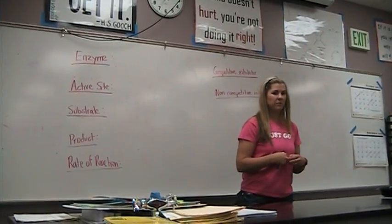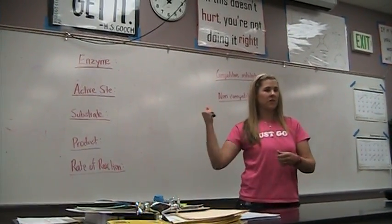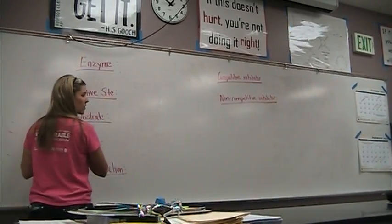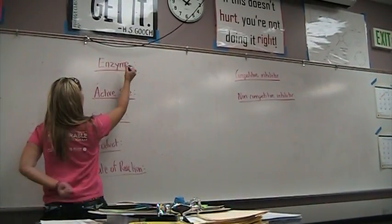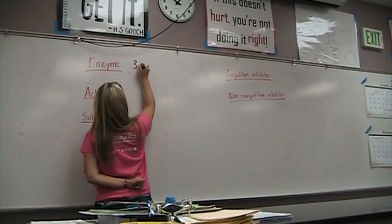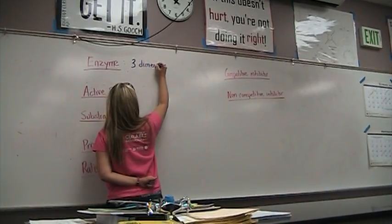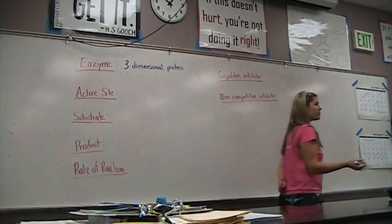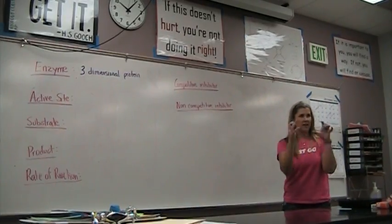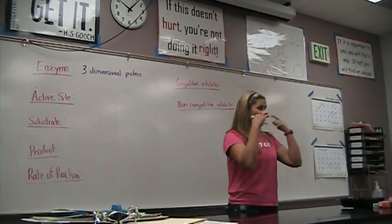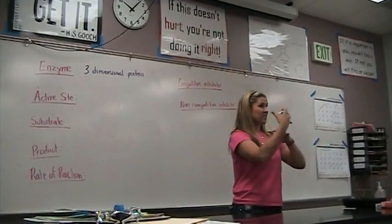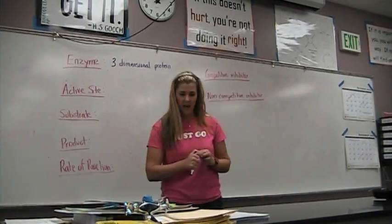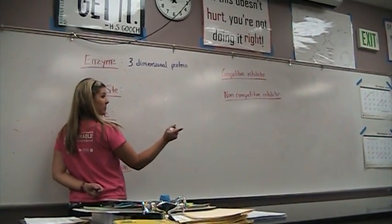The first thing we want to do on this sheet of paper is to find some of these terms. So an enzyme — what is an enzyme? It's a protein. I wrote three-dimensional down because I want you to get in the thinking that it has lots of different sides, because that's going to come into play here in a little bit. So it's a three-dimensional protein. It speeds up the rate of the reaction, makes things happen faster.